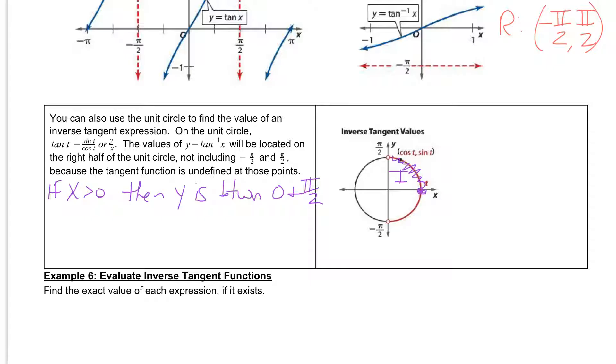which is quadrant number 1. We can include this point right here, which is 0, but we cannot include the pi over 2. So we would use angles like pi over 3, pi over 4, pi over 6.